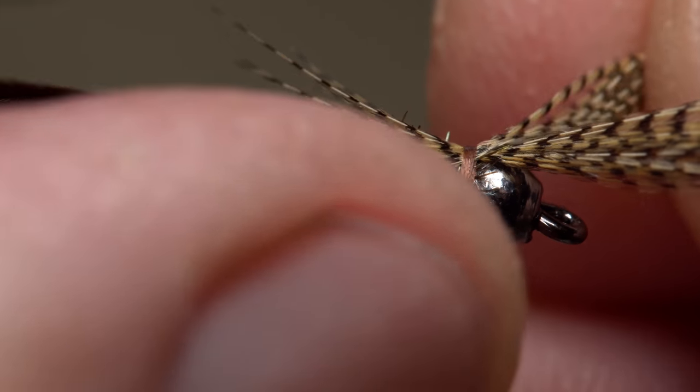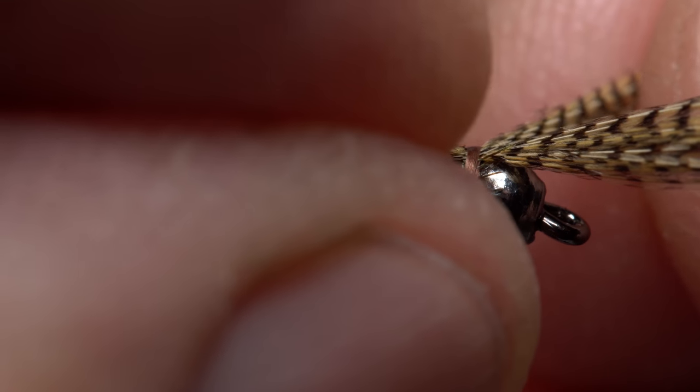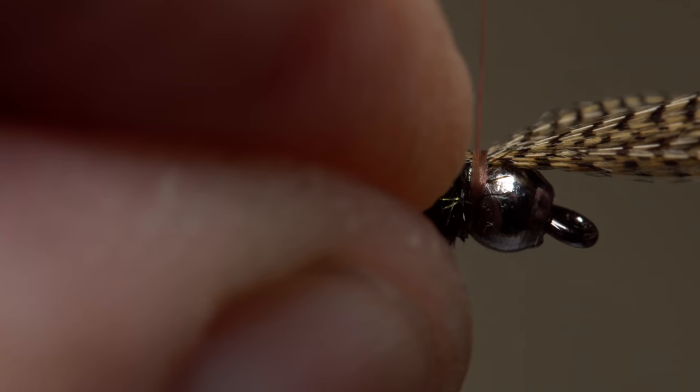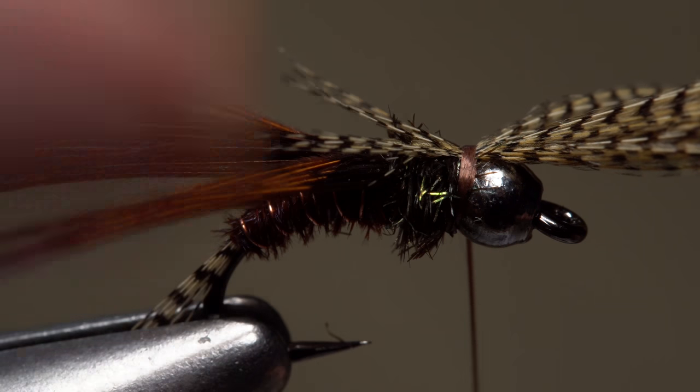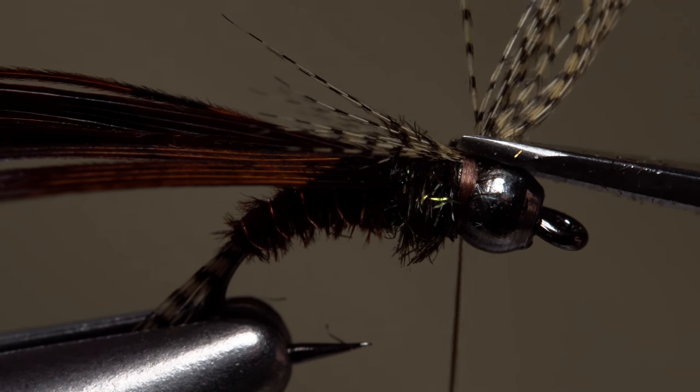This can be a little delicate and fussy, but just take your time, go easy, and you'll get it. Once you're happy with the orientation of the fibers, take a final thread wrap to lock them down. Then use just the very tips of your tying scissors to snip the excess butt ends off close.